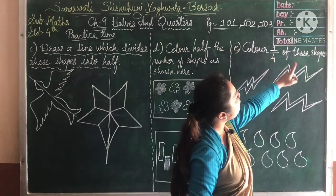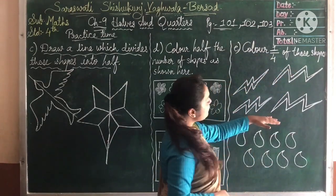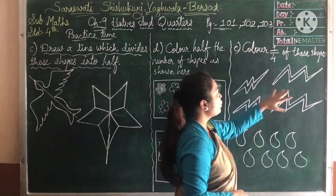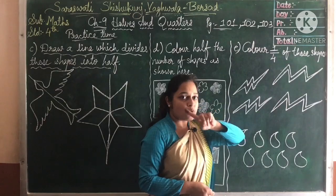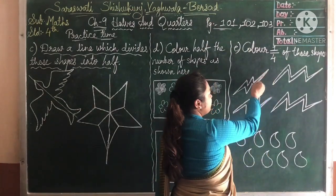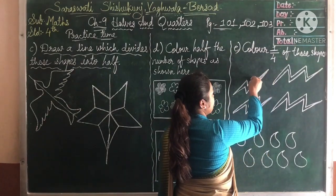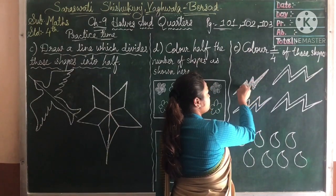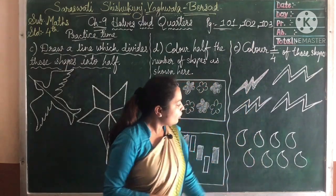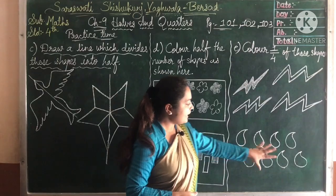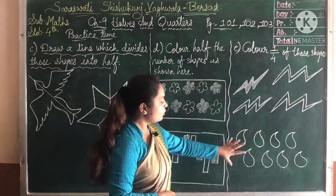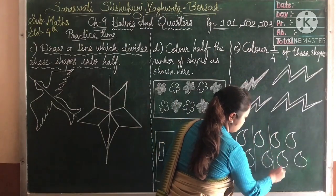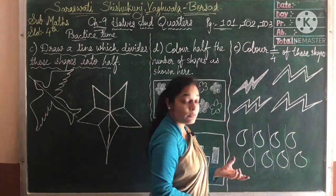Here, color one-fourth of these shapes. If you will see, there are four designs. One-fourth of four is only one — we have to shade only one pattern here. For the next one, eight patterns are there, so what is one-fourth of eight? If I make four parts, then I have to shade two patterns.